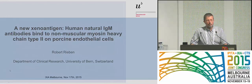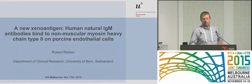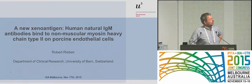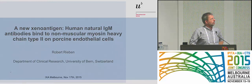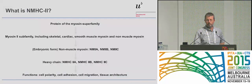Thank you for giving me the opportunity to present our data here. I'm going to talk about the possibility of having found a new xenoantigen. We found that human natural IgM antibodies bind to non-muscular myosin heavy chain type 2 on porcine endothelial cells.